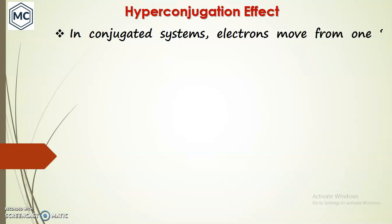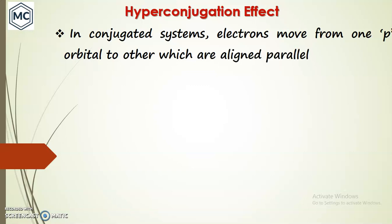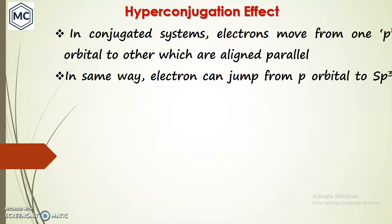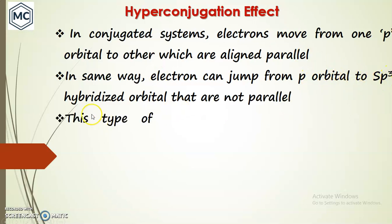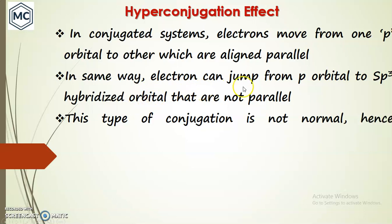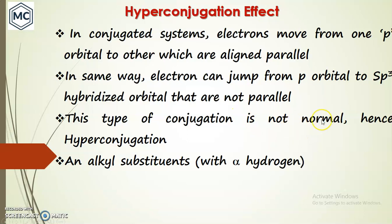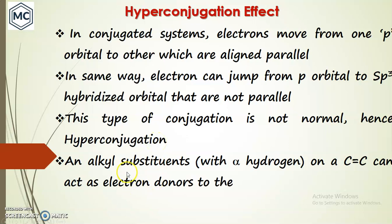As you know, in a conjugated system, electrons move from one p orbital to another p orbital, or from a pi orbital to another pi orbital, which are aligned parallel. In the same way, an electron can jump from a p orbital to an sp3 hybridized orbital, even though they are not parallel. This type of conjugation is a non-normal one, hence it is called hyperconjugation.